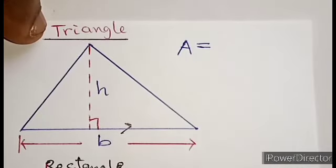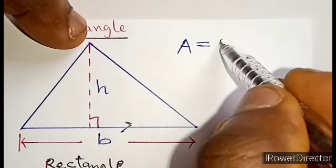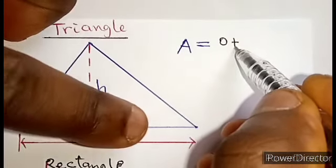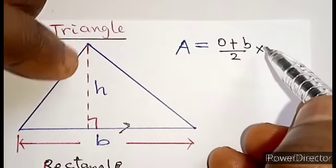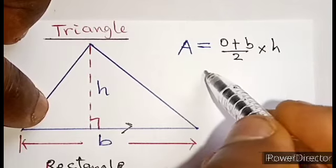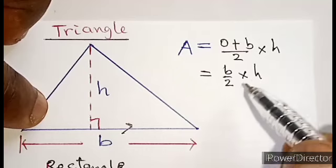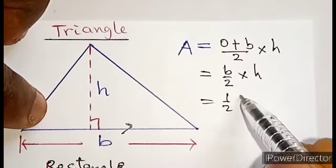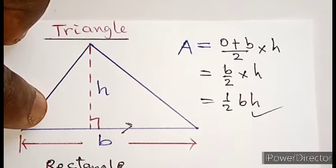Let's start with a triangle. The top is just a point, that's zero, plus the bottom is the base, that's b, over 2 times perpendicular height, the h here. And if you calculate it, you have b over 2 times h, and that is half base times height. That's how they often write the formula.